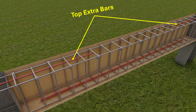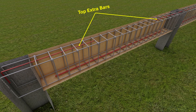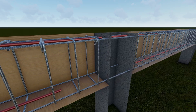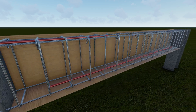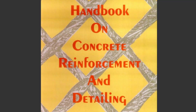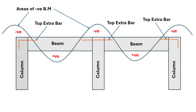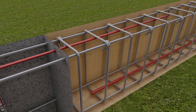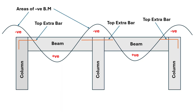In RCC beams, top extra bars are provided to handle areas of high stress. These bars help in resisting the negative moments developed in the beam. The SP34 codebook gives us guidelines on how to calculate the length and placement of these bars. The top extra bars are provided in areas where the beam experiences negative moments, usually near the supports. Negative moments cause the top of the beam to be in tension, so extra bars on the top are critical in resisting these forces.